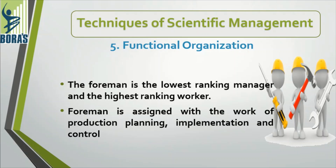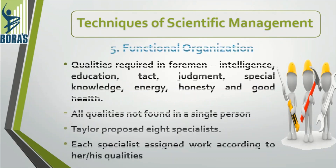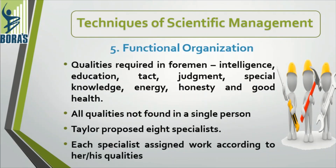To become a good foreman, certain qualities are necessary — such as intelligence, education, tact, judgment, special knowledge, energy, honesty, and good health. It is not possible to find all these qualities in one person. Therefore, Taylor proposed eight specialists. These specialists work according to their respective qualities. These specialists are further divided into two groups: four involved in planning and four involved in execution.